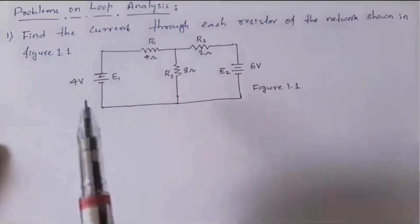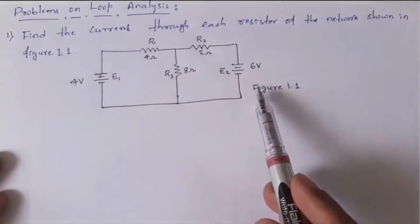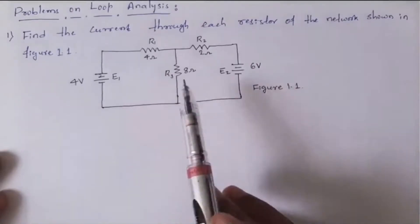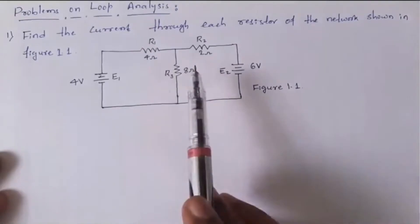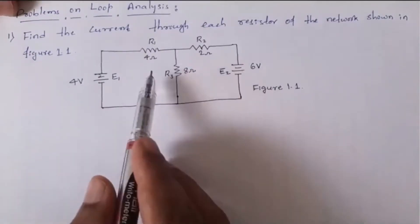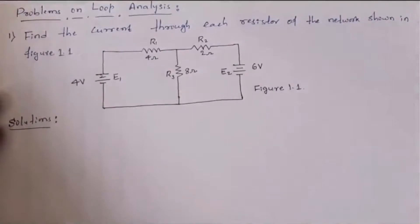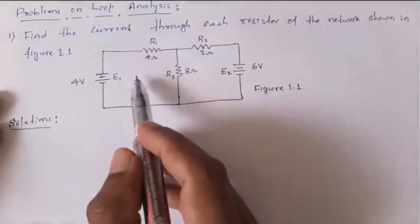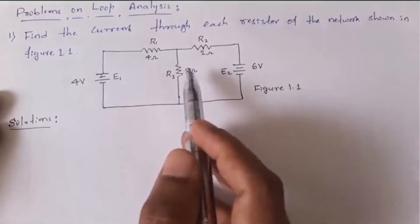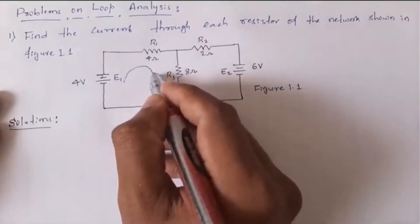Problem number one: find the current through each resistor of the network shown in figure 1.1. This network has three resistors and two voltage sources. To solve this problem we need to get two loop equations. As there are two loops, we can arbitrarily assume any current direction. I call this mesh one and this mesh two.